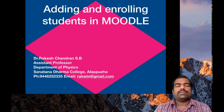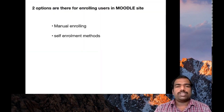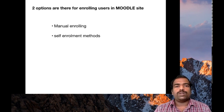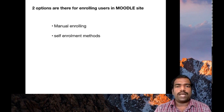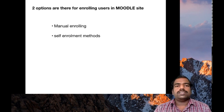Teachers can enroll students in their respective courses, and there are two options. First is manual enrolling, where you can enroll students manually. Second is self-enrollment, which means students can enroll into a particular course using an enrollment key. In this workshop, you enrolled into this course using an enrollment key, which falls under self-enrollment, because there are more than 2000 participants and it would be very difficult to enroll all of them manually.